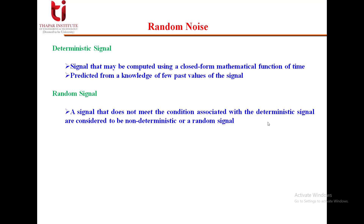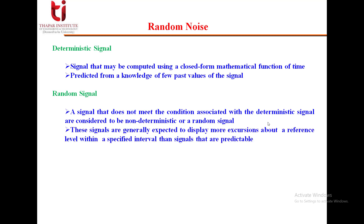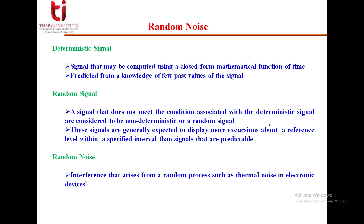A random signal is one that does not meet the conditions of a deterministic signal — it cannot be formulated as an equation and cannot be predicted from past values. Such signals are generally expected to display more excursions around a reference level within a specified interval than predictable or deterministic signals.